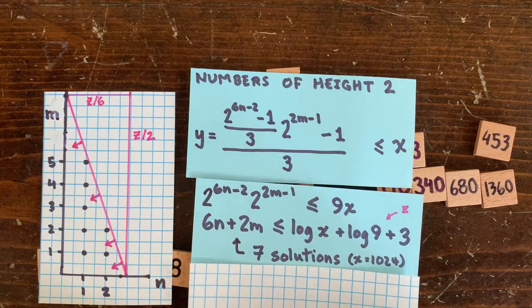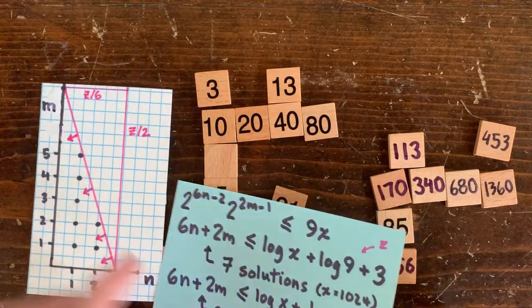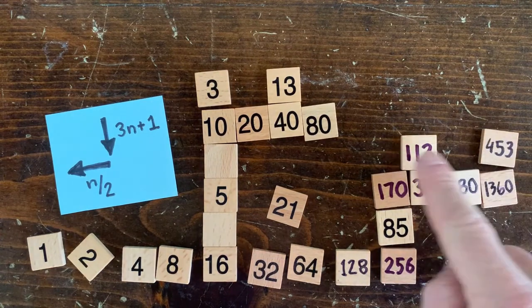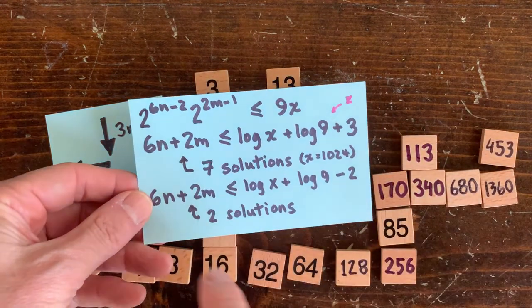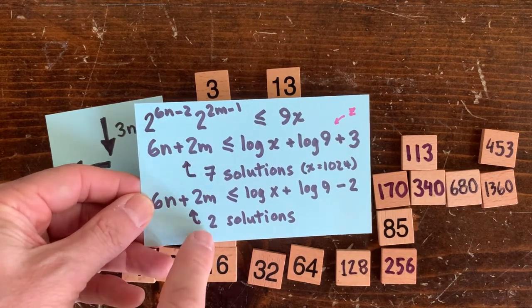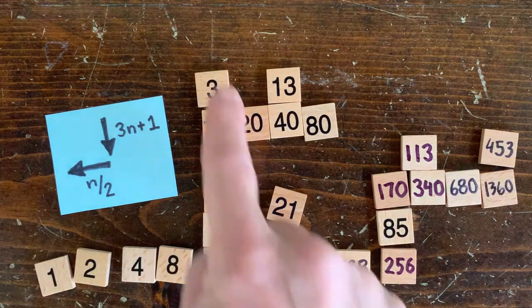The other way to reach a height 2 number is go 6n plus 2 steps across the bottom, go up, and then go 2m steps across here. There's two combinations of n and m in this case that satisfy this. So in total, we predict that there should be 7 plus 2 equals 9 height 2 numbers less than 1024, which is correct.